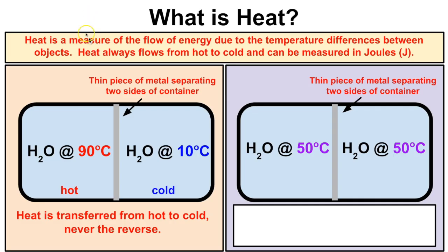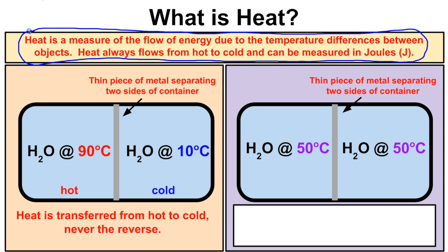So what is heat? Heat is a little bit different from temperature — don't get the two confused. A lot of people think they're the same thing, but they're not. Heat is a measure of the flow of energy due to temperature differences between objects, and heat always flows from hot to cold. We can measure heat in a unit called joules.